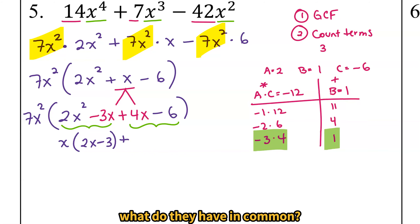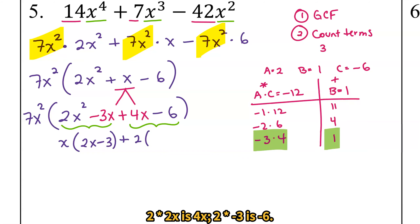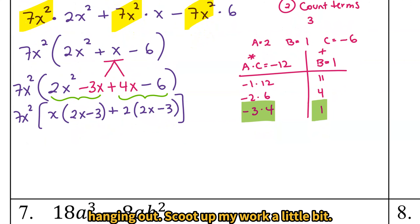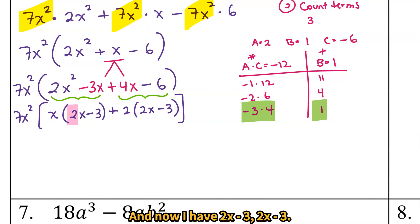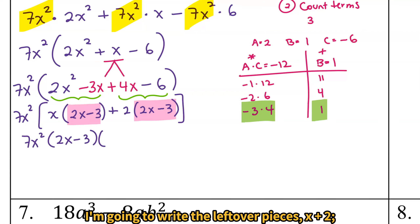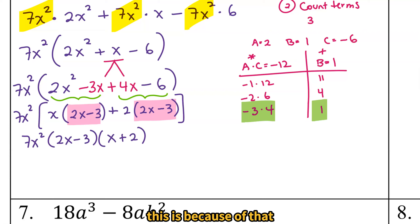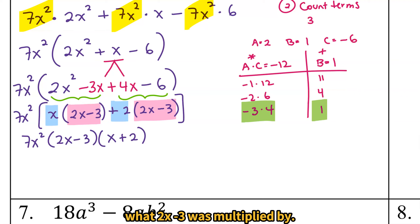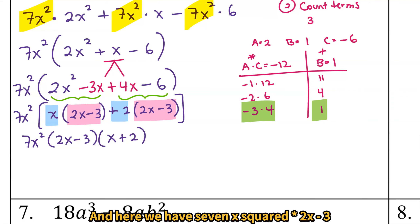Plus sign comes down. For 4x minus 6: 4 and 6 have 2 in common. 2 times 2x is 4x, and 2 times negative 3 is negative 6. With 7x squared hanging out on the outside, I now have 2x minus 3 and 2x minus 3 — they are the same. So 7x squared out front, and then in the last parentheses I write the leftover pieces, x plus 2, because we're factoring out the 2x minus 3 using the reverse distributive property.